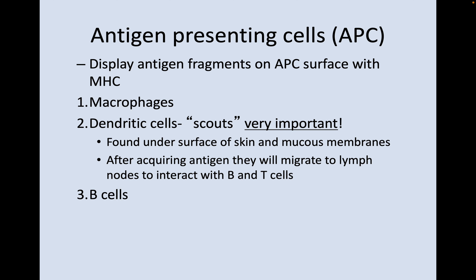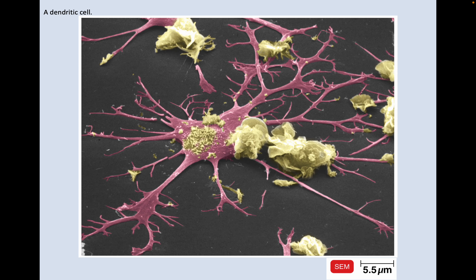B cells are also antigen-presenting cells. Here's a picture of a dendritic cell — it looks a lot like a nerve cell with all those dendrites, those little tree-shaped arms coming off of it. So it has a really maximized surface area.